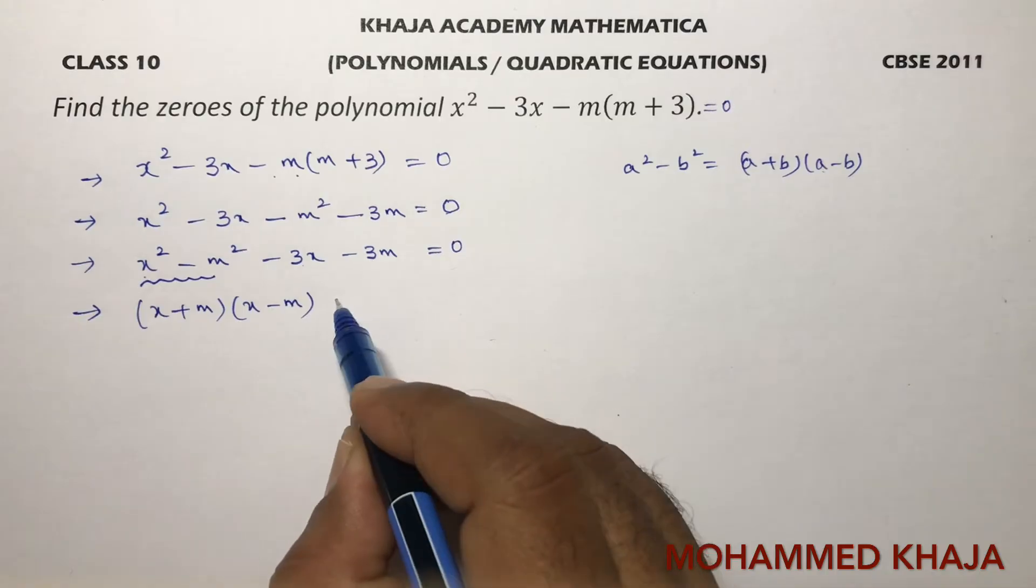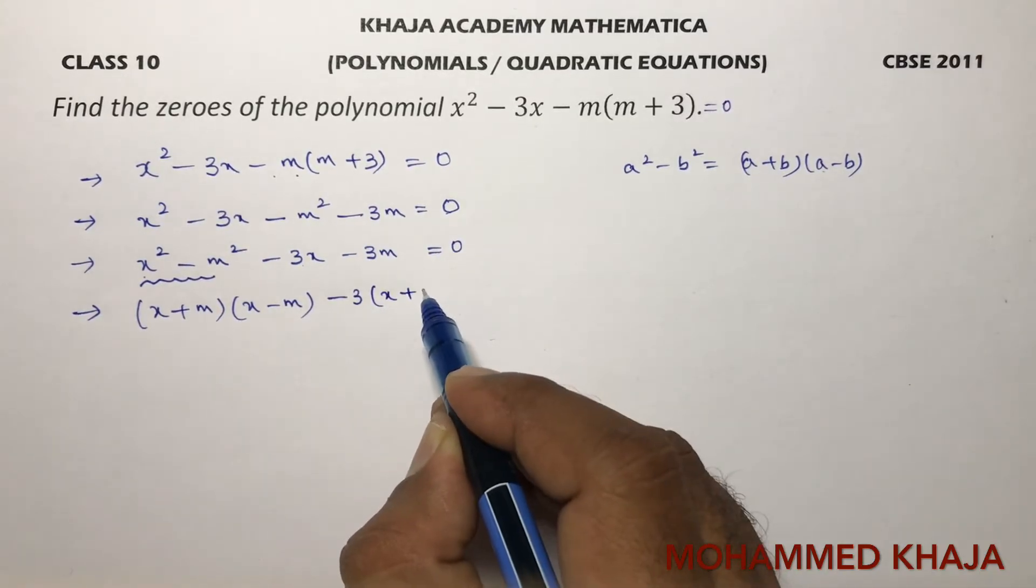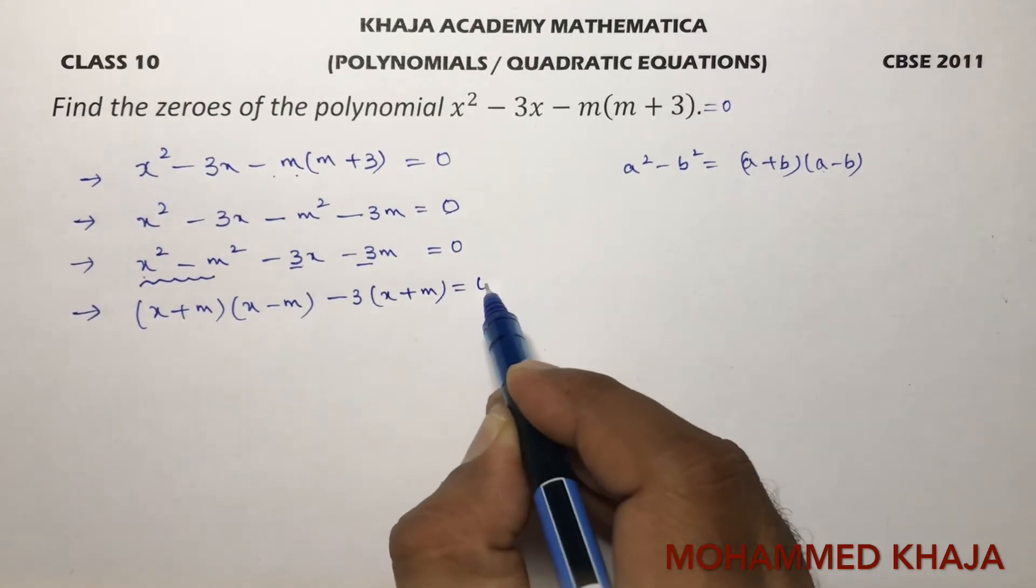In these two terms, I can take -3 common. So I will be left with (x + m).